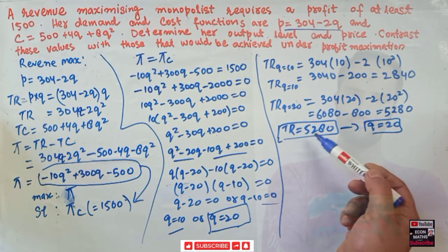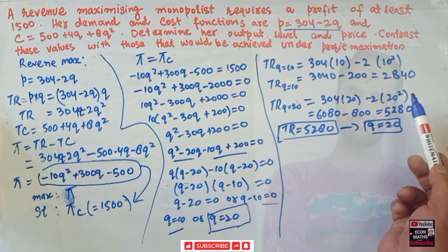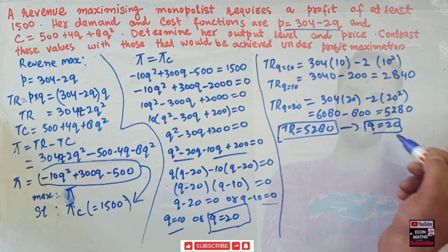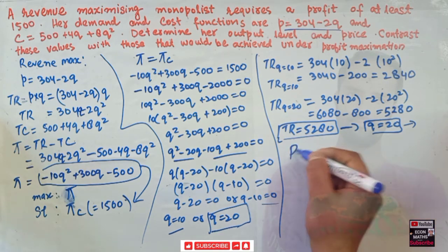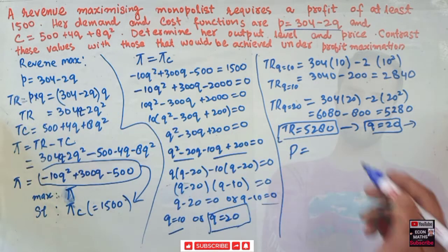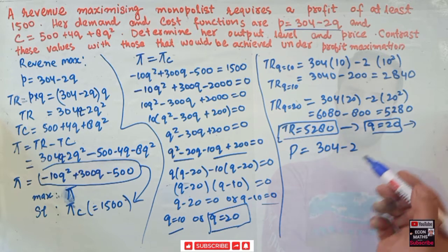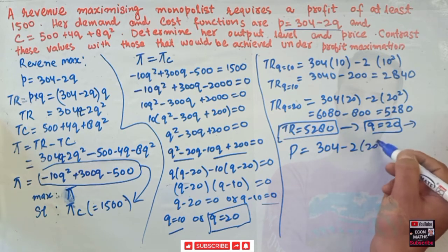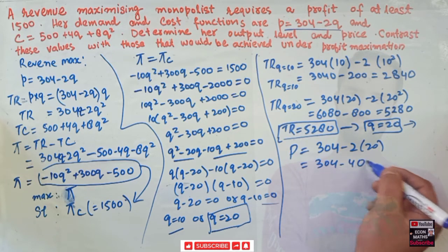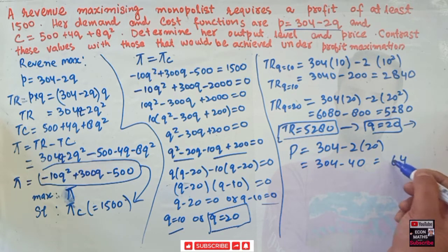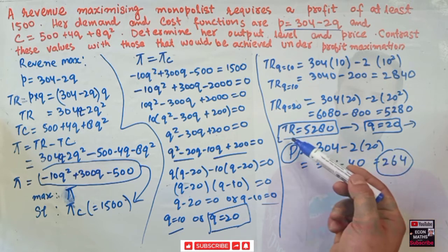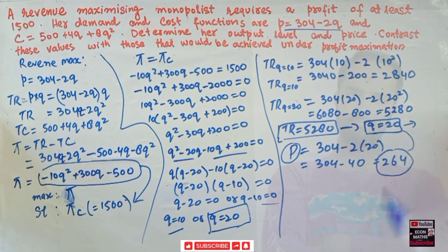The revenue-maximizing monopolist will produce 20 units. The corresponding price is found by plugging q = 20 into the inverse demand function: p = 304 − 2(20) = 304 − 40 = 264. So under revenue maximization, price = 264 and quantity = 20.